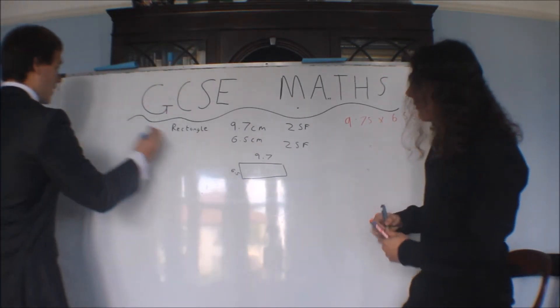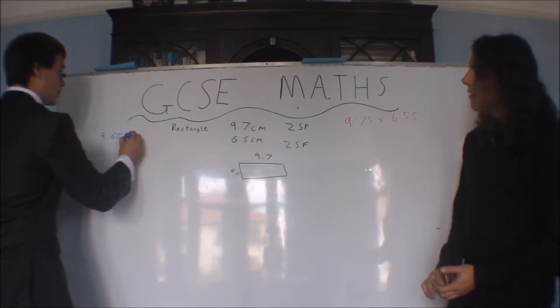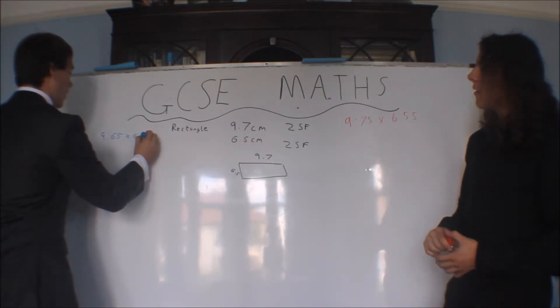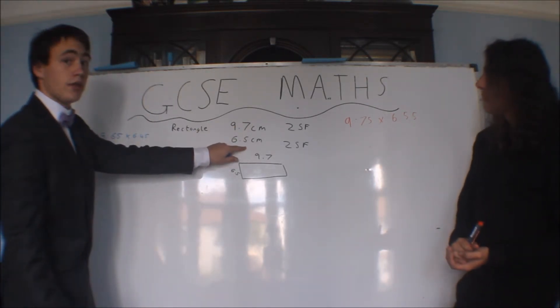Absolutely. We also have the lower bound, which is 9.65 times 6.45. Which would be the lower bound of each of these. That's the minimum it would have been to round up.